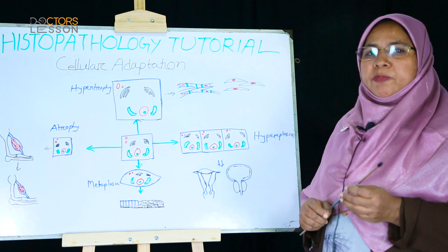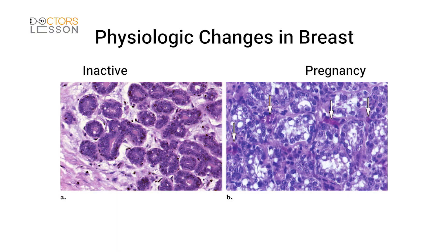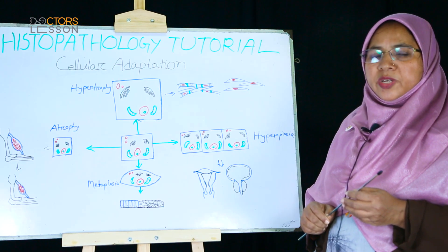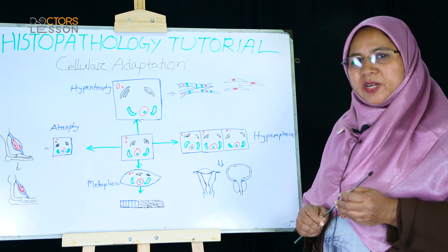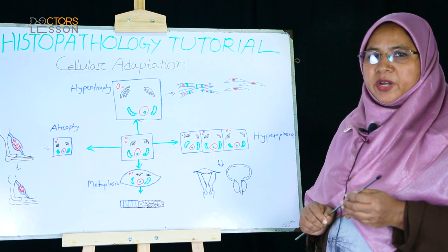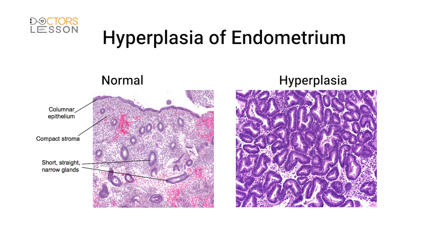Hyperplasia may also be physiological or pathological. The most common physiological hyperplasia is seen in the breast during puberty and pregnancy due to hormonal stimulation. A variant of physiological hyperplasia is known as compensatory hyperplasia, which is seen in the liver after partial hepatectomy, in the kidney after unilateral nephrectomy, and in bone marrow in response to anemia due to any cause. Pathological hyperplasia of the endometrium is caused by estrogen stimulation.